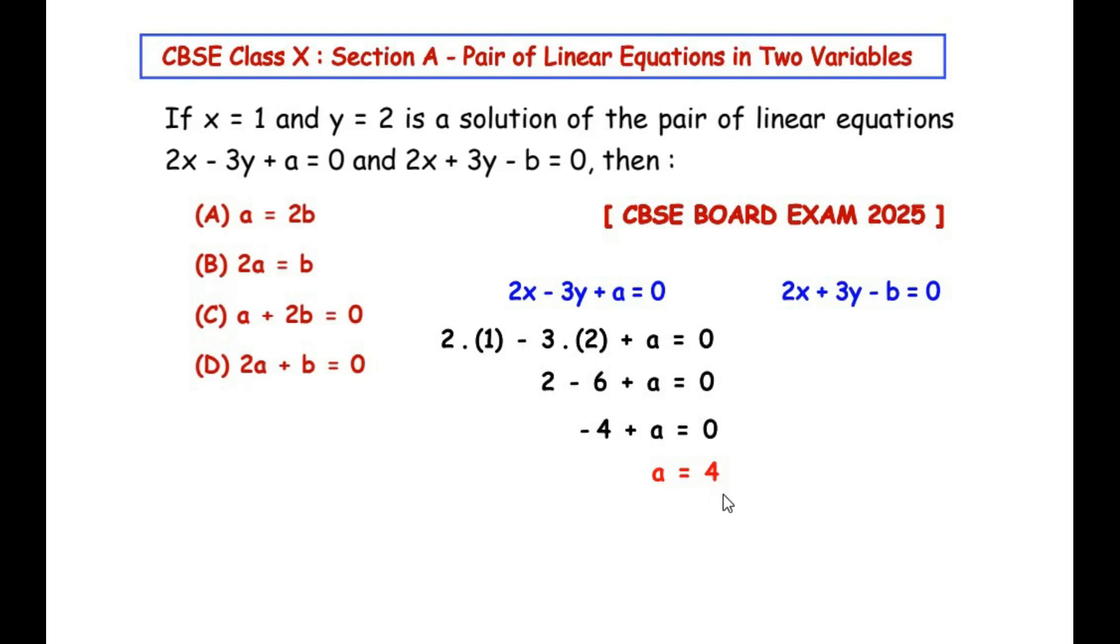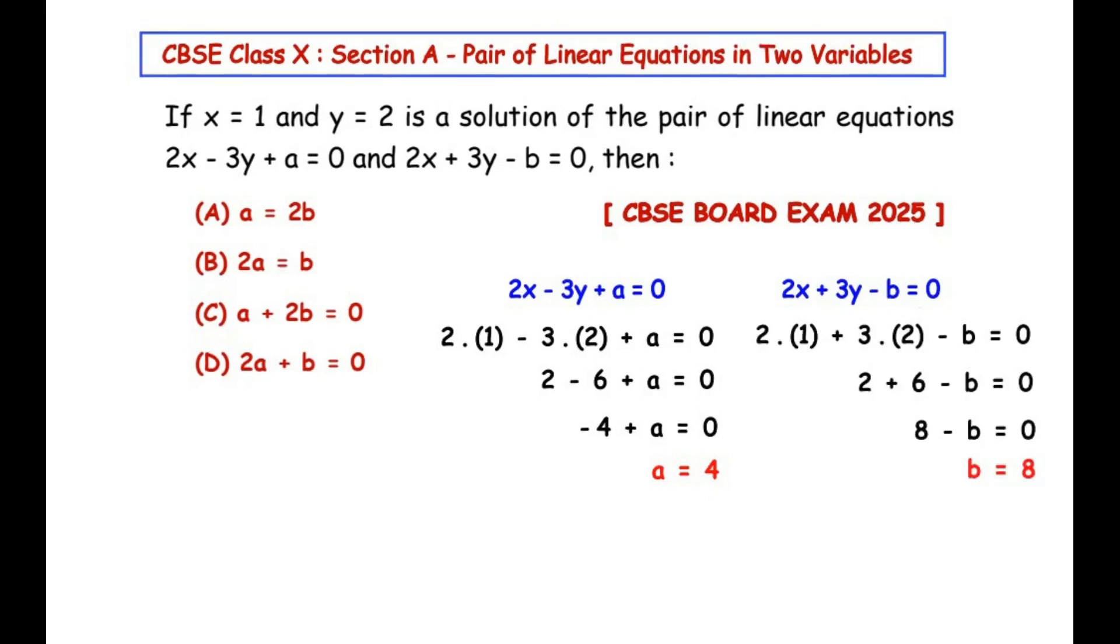Now let us do the same thing for the second equation. So here also we have taken the value of x as 1 and value of y as 2, so we get 2(1) + 3(2) - b = 0. Now 2 times 1 is 2 and plus 3 times 2 is plus 6 minus b = 0. Now 2 + 6 is 8 - b = 0. Now let us take -b to the right hand side so it becomes positive b, so b = 8. So the value of a we got here is 4 and the value of b is 8.